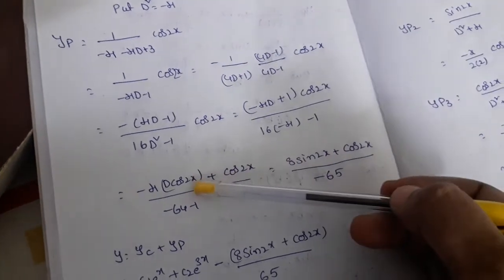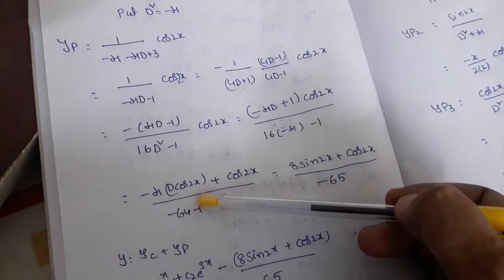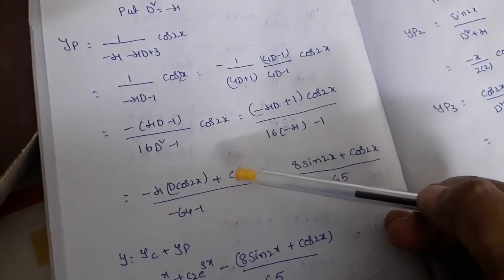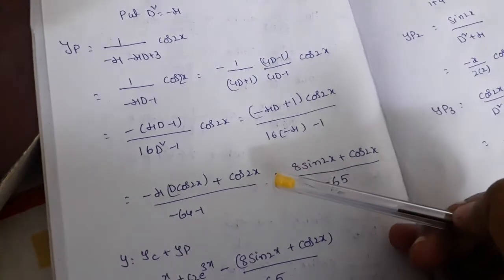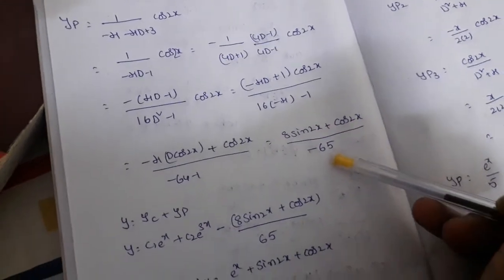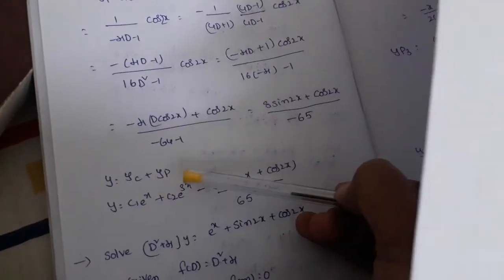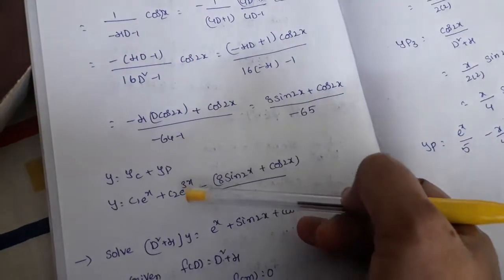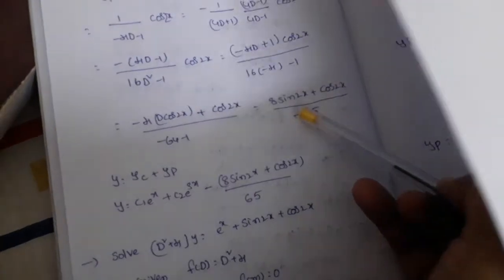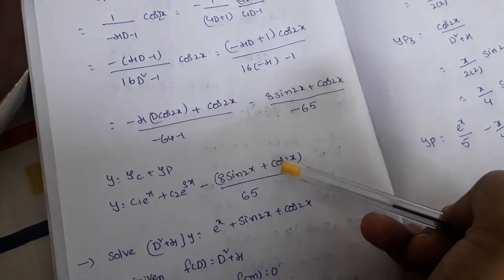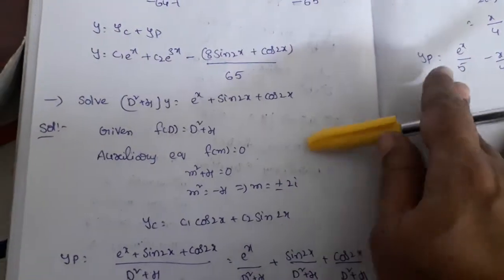So 16×(−4) − 1 = −65. D means derivative, so derivative of cos(2x) is −2sin(2x). This gives (8sin(2x) + cos(2x))/(−65). The general solution is y = c₁eˣ + c₂e^(3x) minus (8sin(2x) + cos(2x))/65.